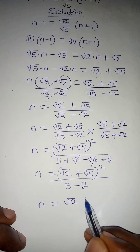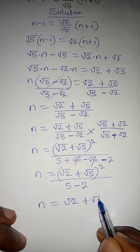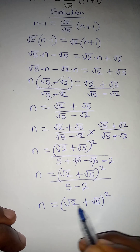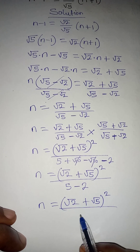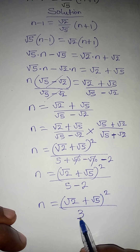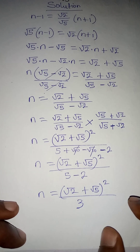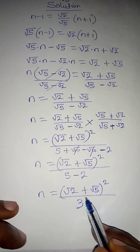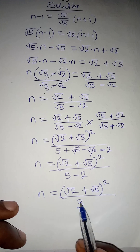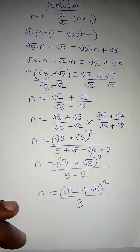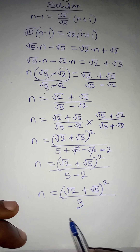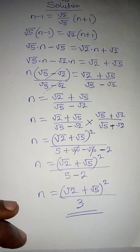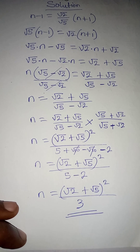So n equals root 2 plus root 5, all squared, over 3. The reason for rationalizing was to have a rational number as the denominator, not an irrational one. Thank you for watching — subscribe to my YouTube channel for more videos like this.